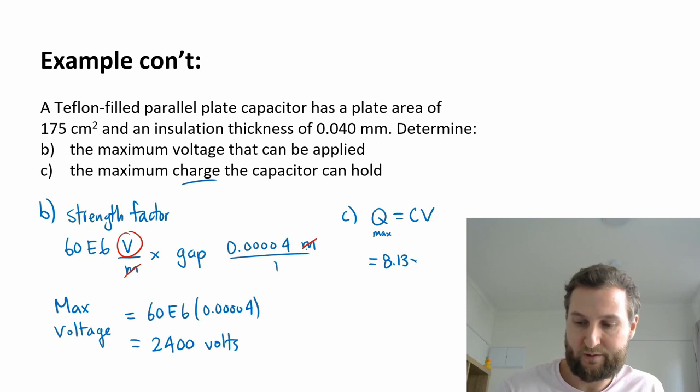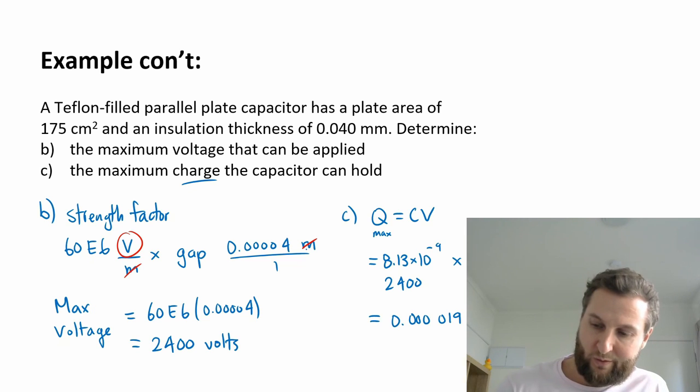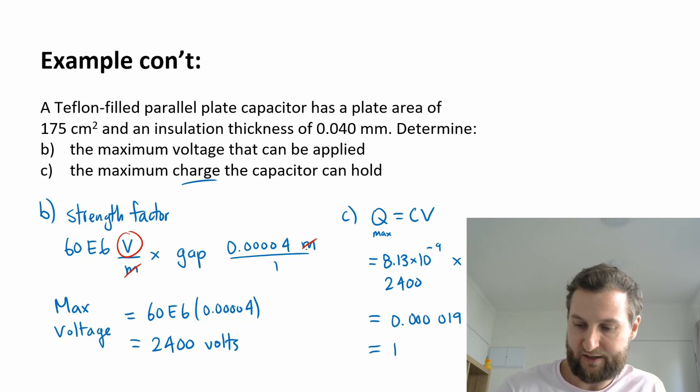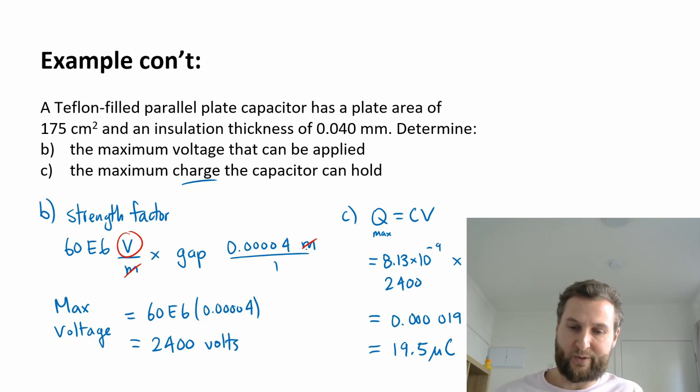That was nano, so times 10 to the minus 9, multiplied by 2,400 volts. 0.0000195. Now it's charge, this is in coulombs. I might group this and say into micro coulombs. I might say this is 19.5 micro coulombs will be the maximum charge based on Teflon and the constants that we looked up in that table.